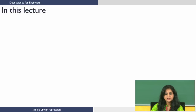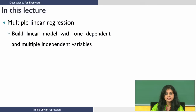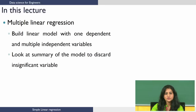In this lecture, we are going to extend all of this to multiple independent variables. This is called multiple linear regression, and in this we are going to build a linear model with one dependent and multiple independent variables. We will also look at the model summary, identify insignificant variables, discard them, rebuild the model, and look at how to identify the subset of variables to build the model — this is called model selection.